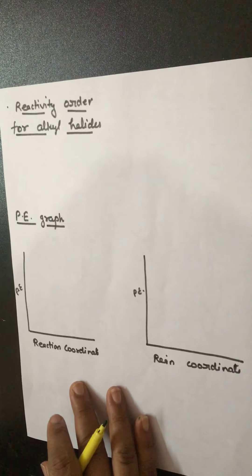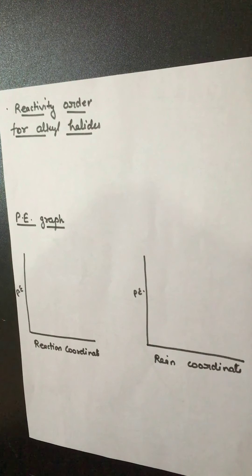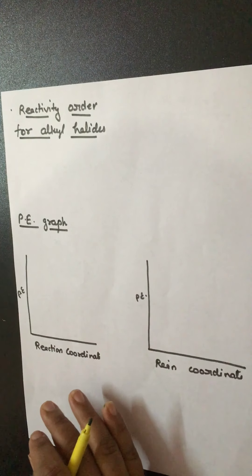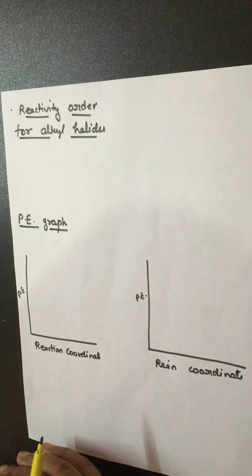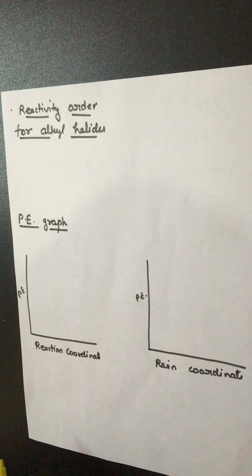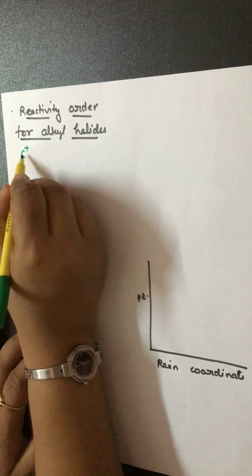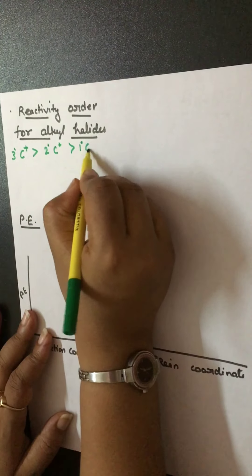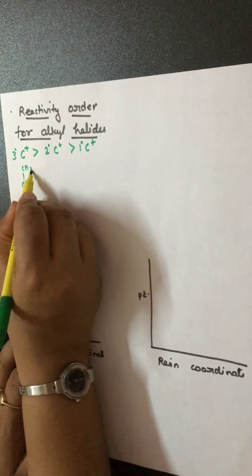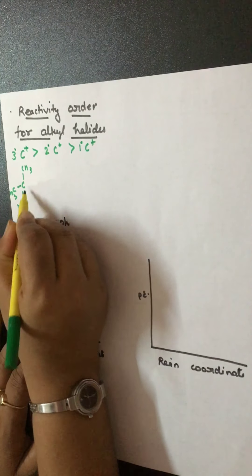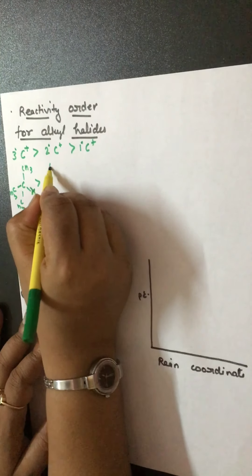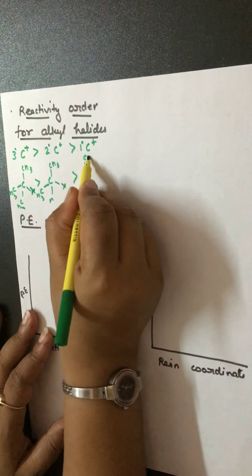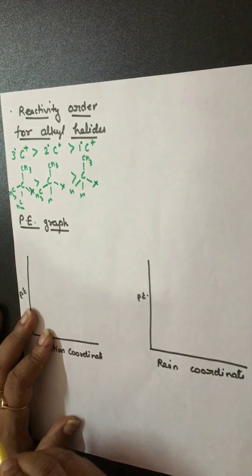Now let's talk about reactivity order. For simple alkyl halides — 1°, 2°, 3° alkyl halides and methyl halides — for SN1, the rate depends on the carbocation intermediate. The stability order of the carbocation intermediate is: 3° > 2° > 1°. So 3° carbocation is more stable than 2° carbocation, which is more stable than 1° carbocation. This means the alkyl halide containing a 3° carbocation is most reactive in SN1, followed by 2°, then 1°, then methyl halide.